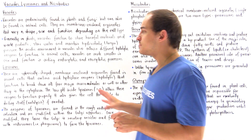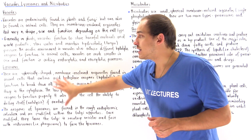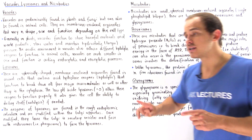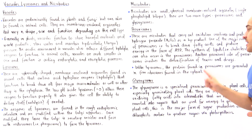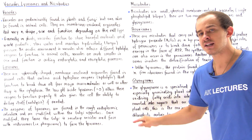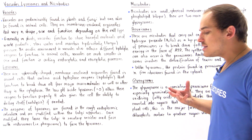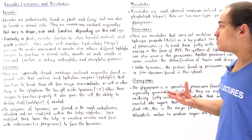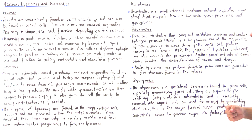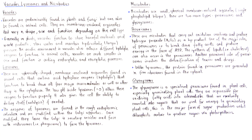A major difference between lysosomes and peroxisomes is the origin of their enzymatic proteins. The hydrolytic enzymes in lysosomes are generated in the rough endoplasmic reticulum. Unlike lysosomes, the enzymatic proteins inside peroxisomes are formed by free ribosomes in the cytosol, and those proteins then enter the peroxisome directly.